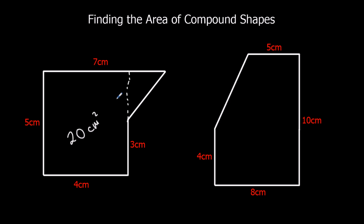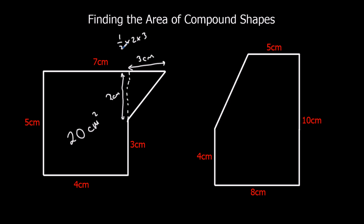For the triangle, we know the area is half times the base times the height, but we need to work out what the base and height are. The whole length is 5 and this part is 3, so this must be 2 centimeters. The whole length here is 7 and this bit is 4, so this must be 3 centimeters. So half times 2 times 3: half of 2 is 1, and 1 times 3 is 3. So the total area is 23 centimeters squared.